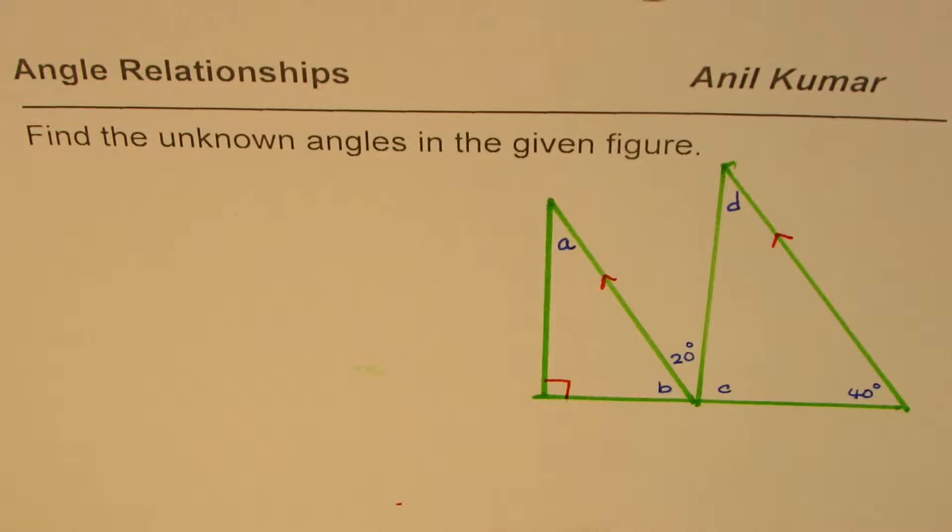C, and D are the unknown angles. You are given a set of parallel lines, and in this diagram, you have to find the unknown angles. You can pause the video and answer the question.